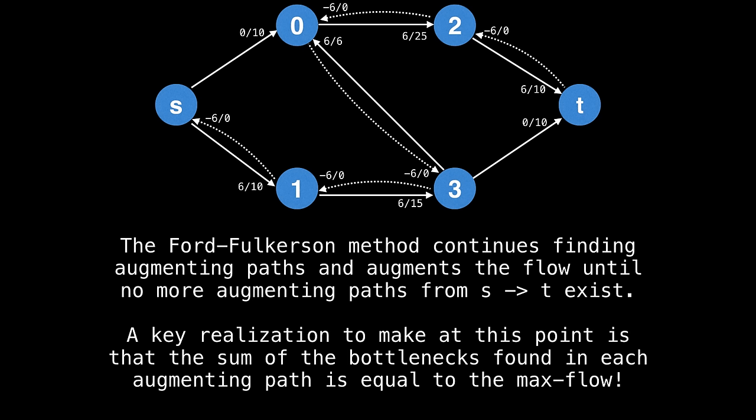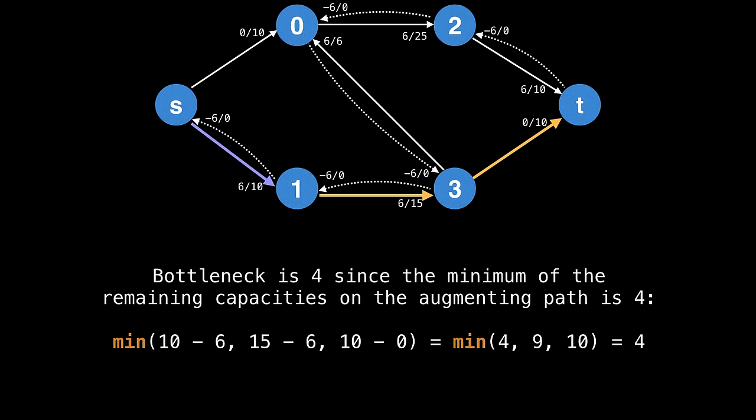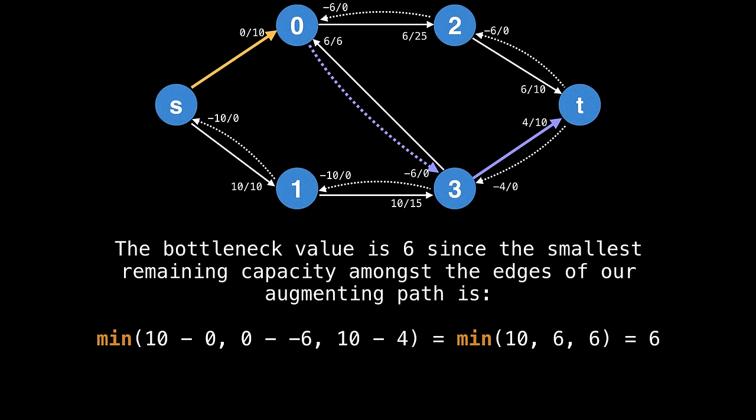So the algorithm proceeds and the Ford Fulkerson method continues to repeatedly find augmenting path after augmenting path and to augment the flow until no more augmenting paths from S to T can be found. The key realization to make at this point is that the sum of the bottleneck values that we acquire with each augmenting path will result in the maximum flow. And that's the whole premise of this algorithm, it doesn't matter so much how you find augmenting paths. But so long as you keep summing the bottleneck values which they produce, you'll find the maximum flow. So let's keep finding augmenting paths. Remember that we can only select edges whose remaining capacity is greater than zero to be part of the augmenting path. So the bottleneck for this augmenting path is four since four is the minimum of all the remaining capacities along this augmenting path.